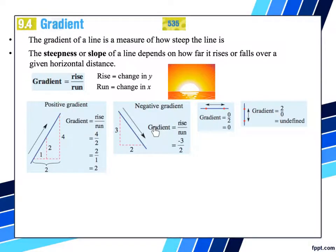With a negative gradient, to get from any point to another point, the rise is negative 3 and then a positive 2, so it's negative 3 over 2. Gradient is 0 because the rise is 0 and the run is 2, so 0 divided by 2 is 0. And if the rise is 2 but there's no run, then I cannot divide by 0, and that is the reason it's undefined.